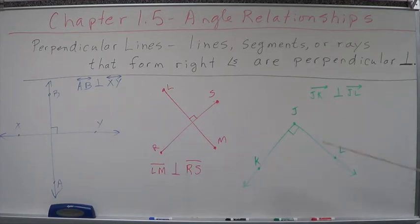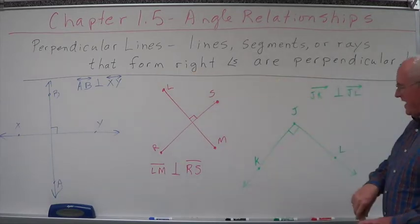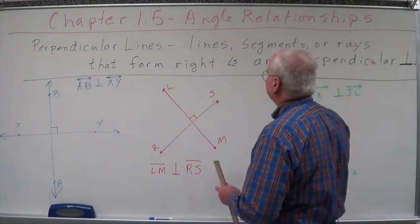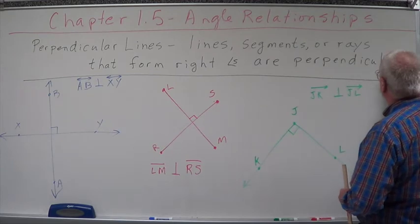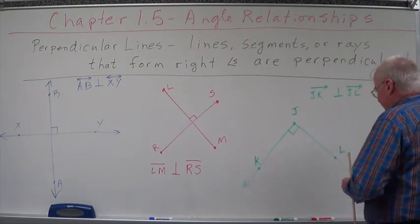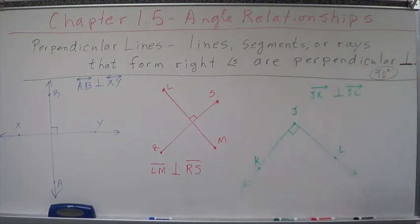90 degrees. Right angles are 90 degrees. Right here, it's 90 degrees. They form angles that are 90 degrees. Perpendicular lines, rays, segments form angles that are 90 degrees.